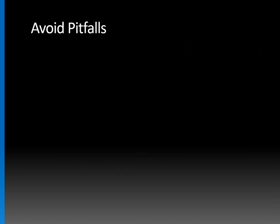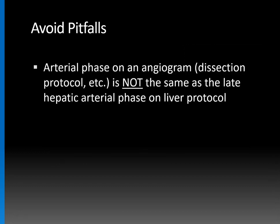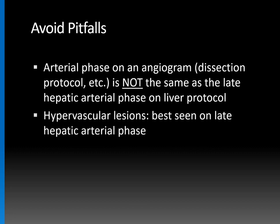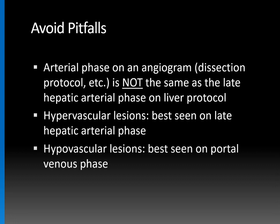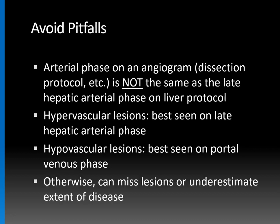To summarize the pitfalls: the arterial phase on a CT angiogram — like a dissection protocol or AAA evaluation — is not the same as the late hepatic arterial phase on a liver protocol. Hypervascular lesions are best seen on late hepatic arterial phase scans, and hypovascular or hypoenhancing lesions are best seen on portal venous phase imaging. You really need to understand this distinction, otherwise you can miss lesions or underestimate the extent of disease.